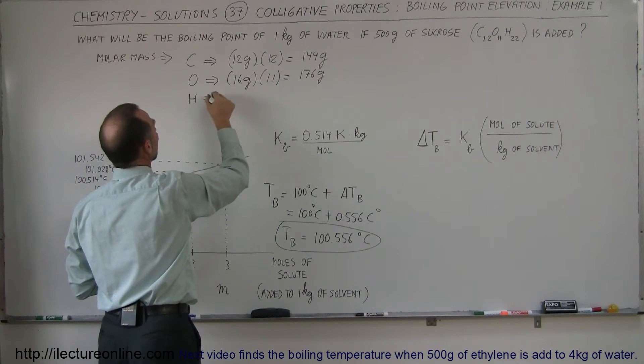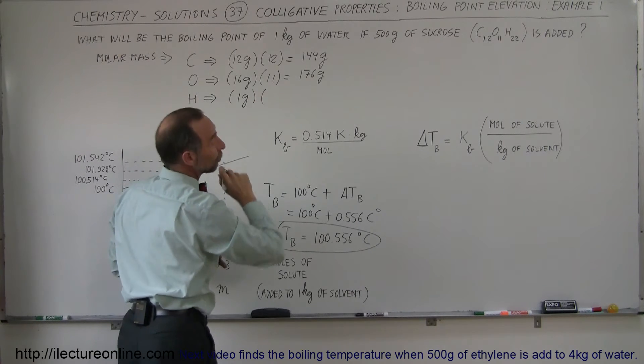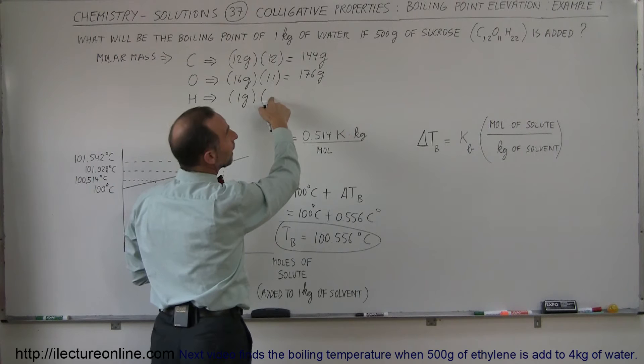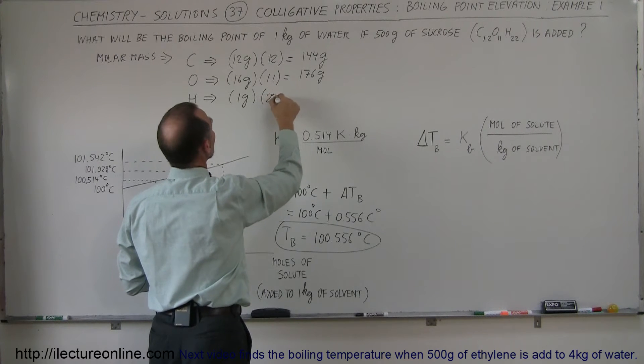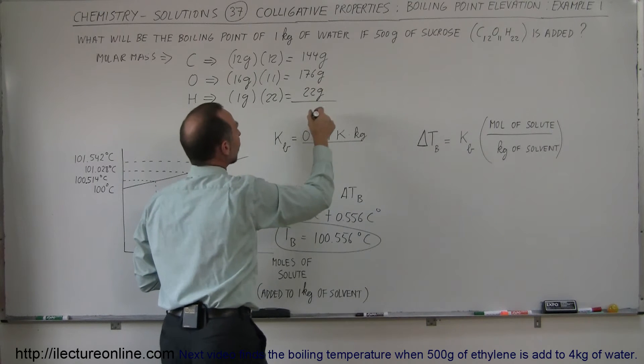And finally, for hydrogen per atom, it's 1 gram for hydrogen. And that's, of course, for a mole of hydrogen, not an atom. And we have 22 of them. So that would be another 22 grams. So this would be the molar mass for sucrose.